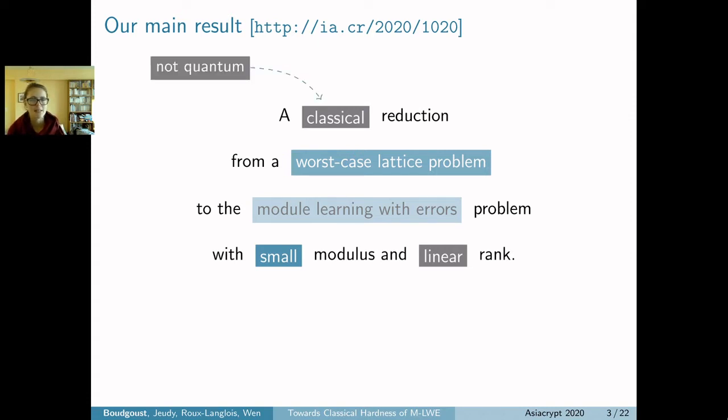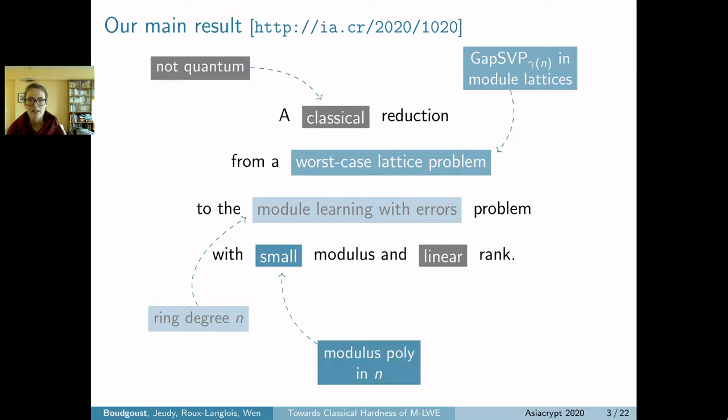When I say classical, I mean the reduction is not quantum. The worst-case lattice problem is the approximate gap shortest vector problem in module lattices, and the module learning with errors problem has an underlying ring of degree n, which is our asymptotic parameter throughout the presentation. When I say small modulus, I mean polynomially small in the ring degree, and the rank is also linear in this ring degree.